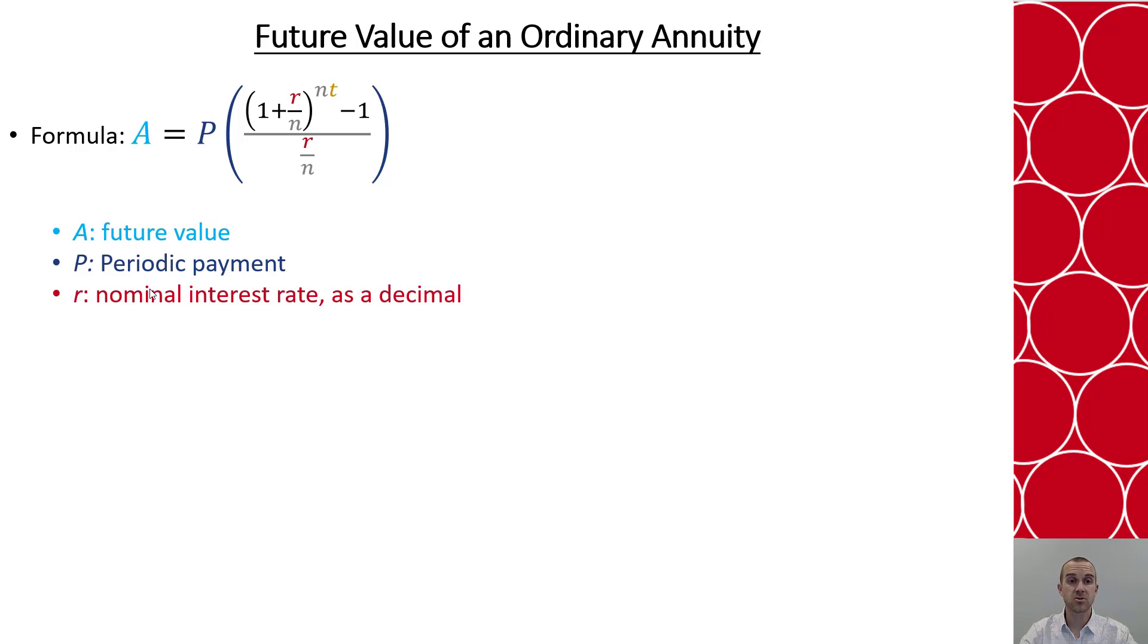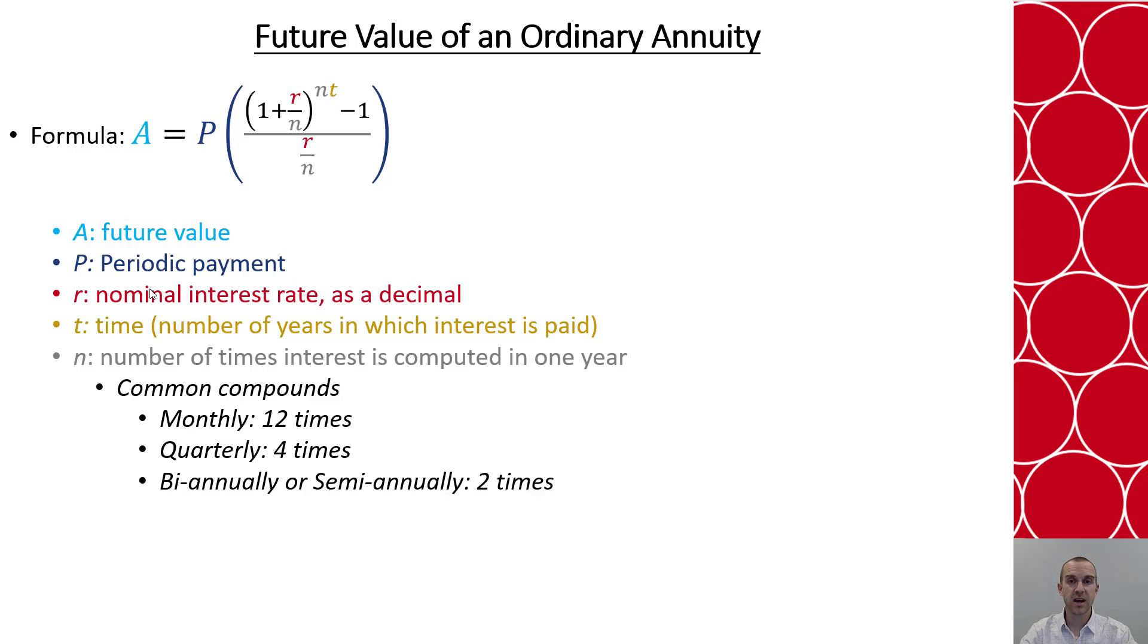R is still our interest rate, and T is still time in years. And N is still the computed times that interest will occur—how many times are we compounding? And again we still have our monthly or quarterly and semi-annually options. And it's still true that R over N represents our periodic rate, and that that exponent of the number of computations times time will be the number of periods for which this occurs.